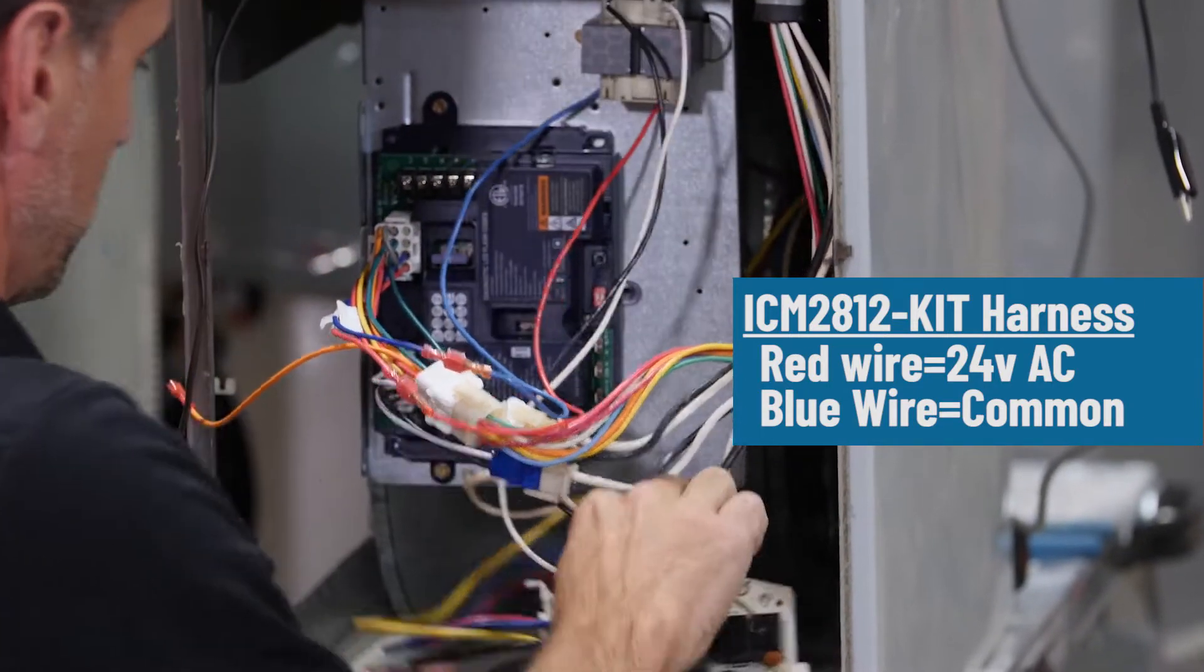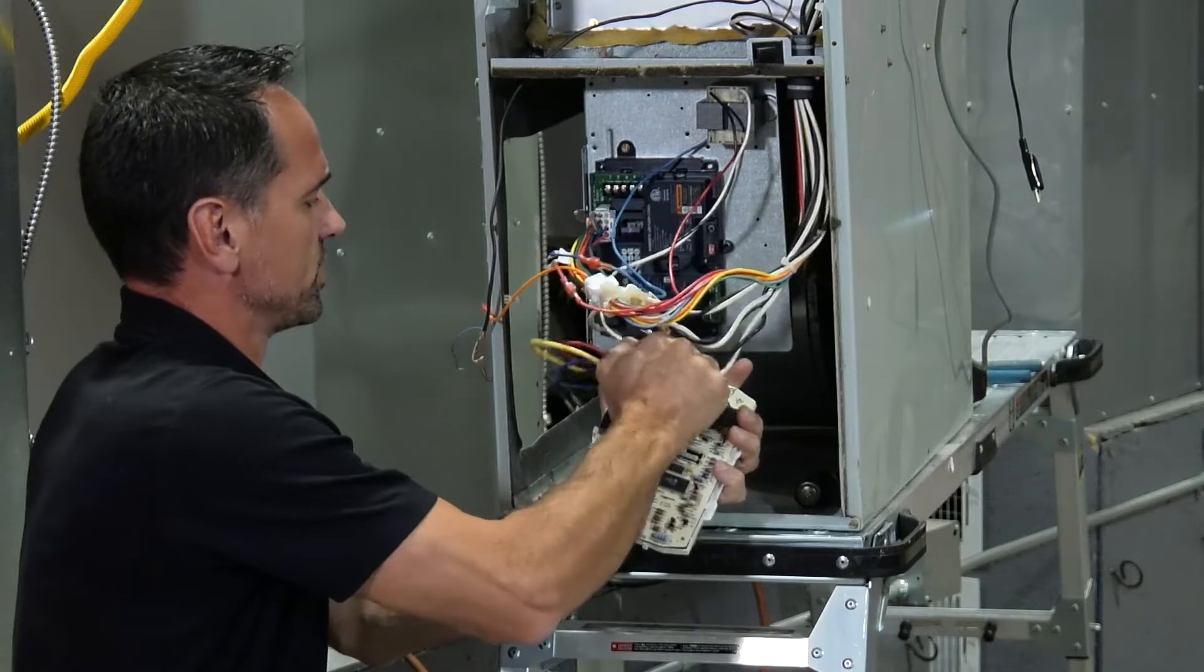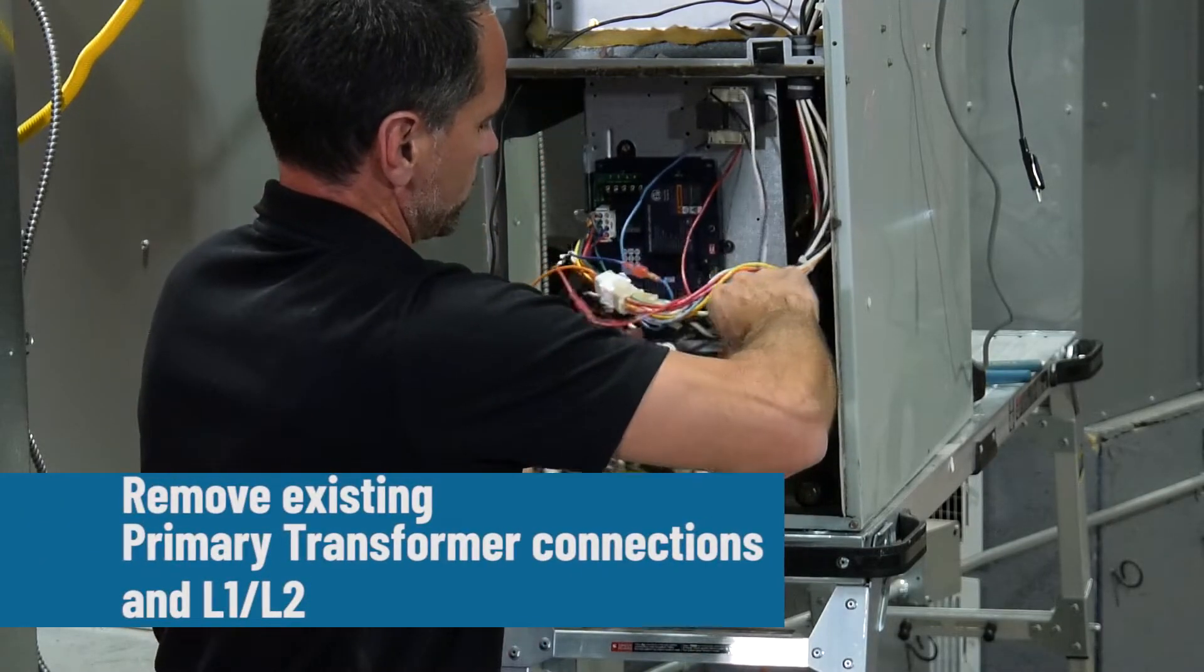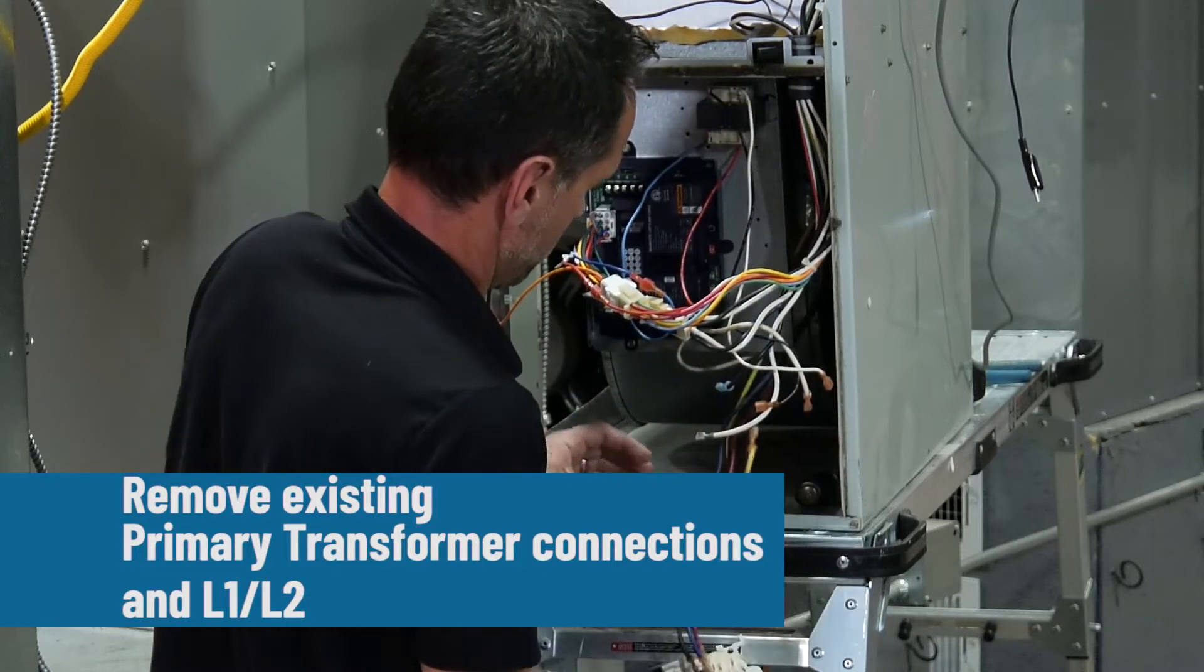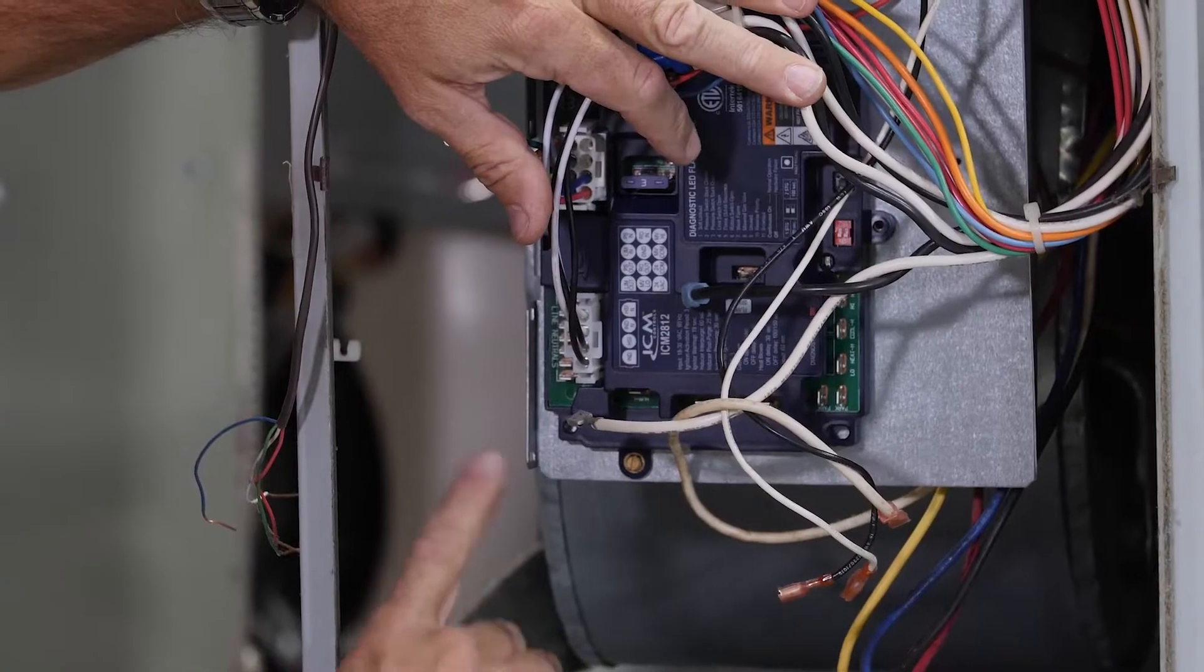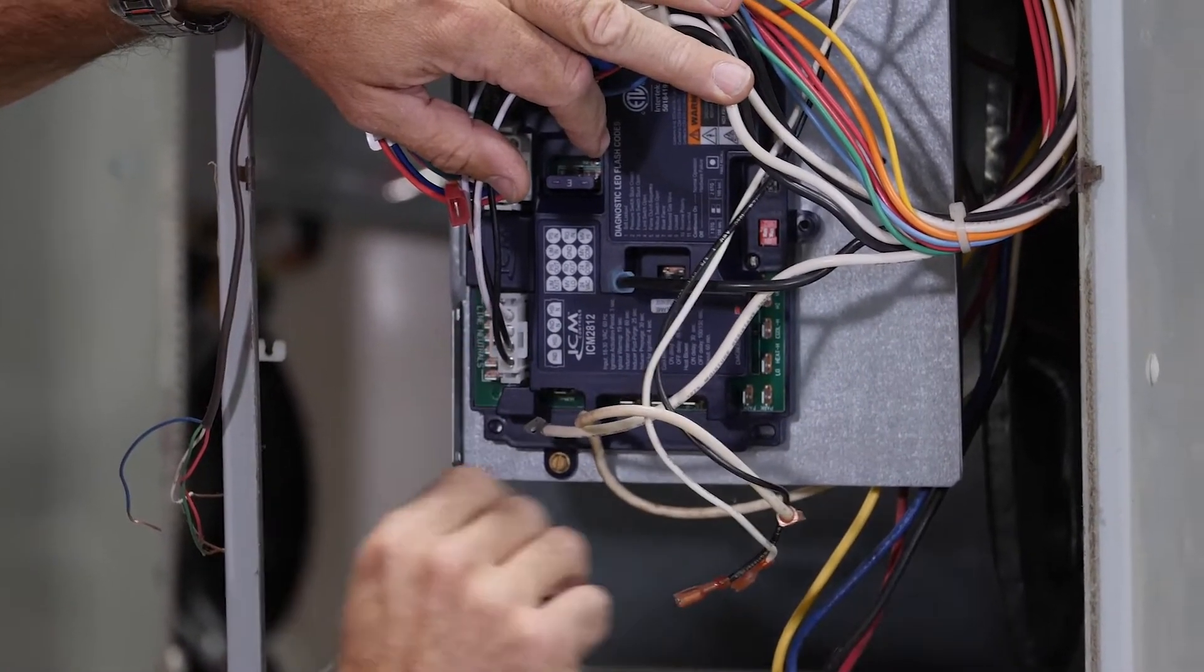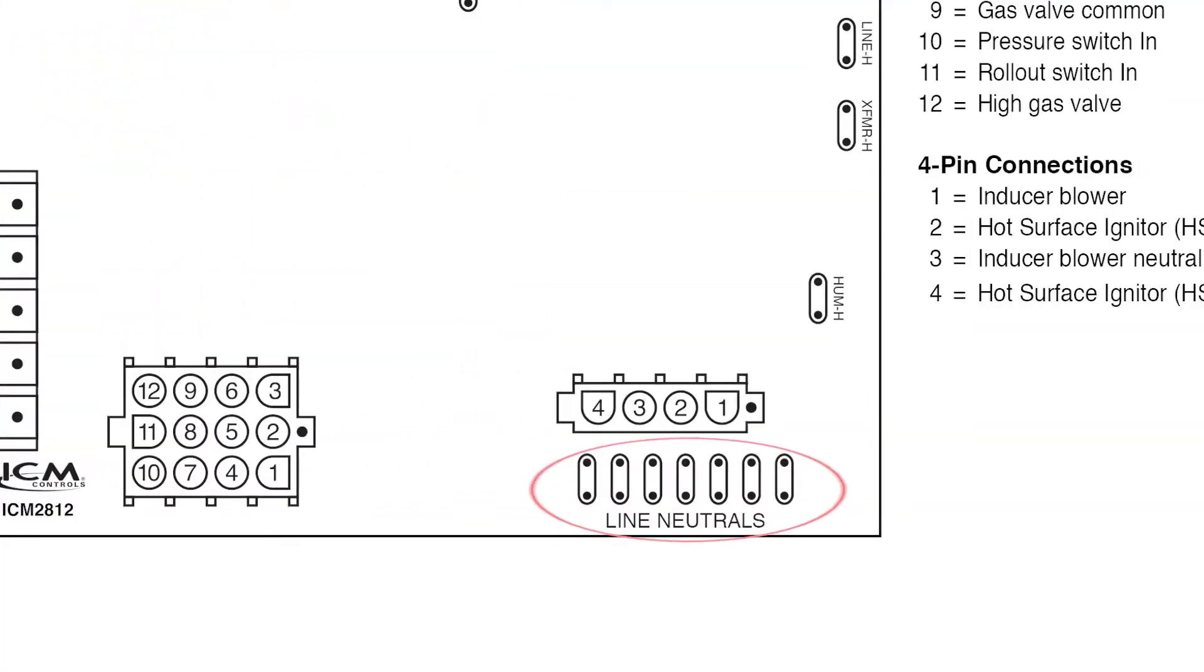Okay. Then we take all of our L2 connections off and we have our transformer primary and our L1. Here you'll see all your line neutrals. So all the white wires are going to line up nice and neat over here. It doesn't matter which one goes to where as long as it's on your neutral.